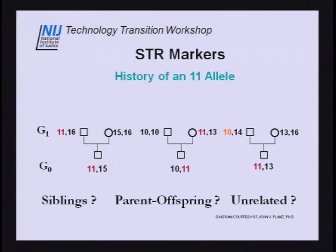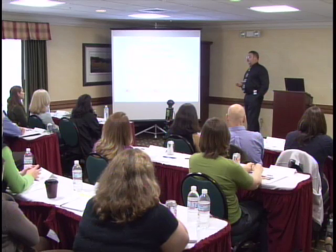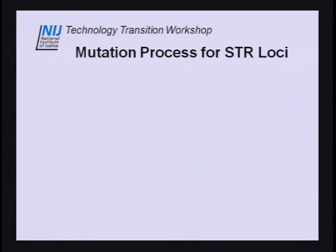Looking directly at the parents of these individuals, two of them drop out right away. We have more information to base this on. We can see where these 11 alleles are coming from — in one case from a father, in another from a mother. But what if the parents don't even have the 11 allele? This 10 allele could have undergone mutation, making it into an 11. That's a common process, and it's something we don't have to think about when comparing evidence to a suspect, but it's a real strong reality once you start crossing generational boundaries. We know very well how the mutation process occurs in STR loci.